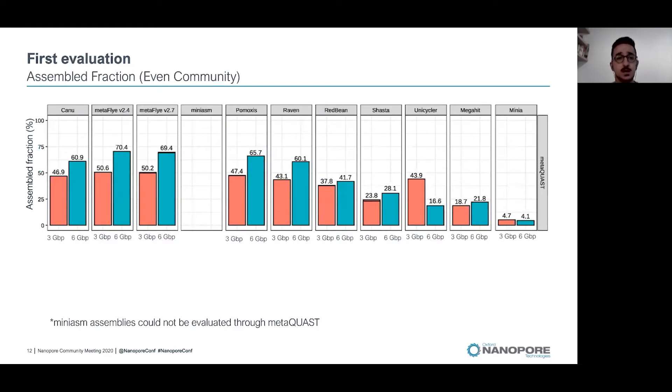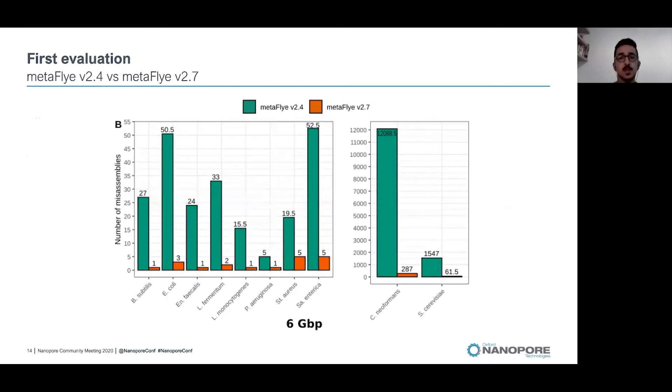These are the results. I'm showing here the fraction of metagenome that recovered by each tool. As you can see, the best results were obtained by MetaFlye. You may notice that we used two different versions of MetaFlye. This was because of delays in publication, so a newer version of MetaFlye was available and we decided to use it. We maintained both versions because we found out that the newer version of MetaFlye performs better and reduces the number of misassemblies.